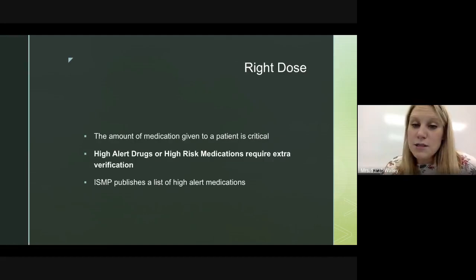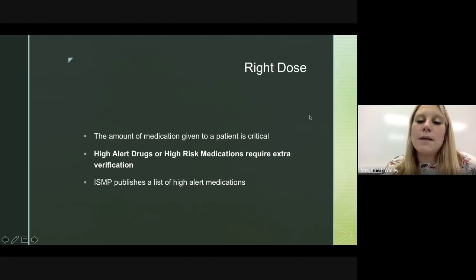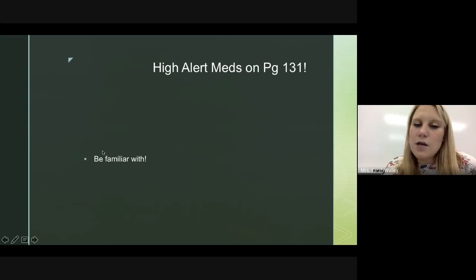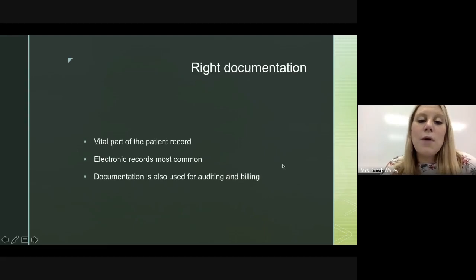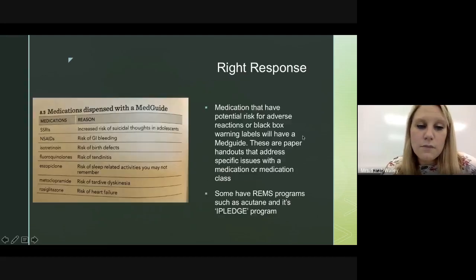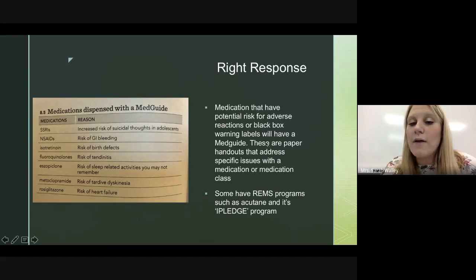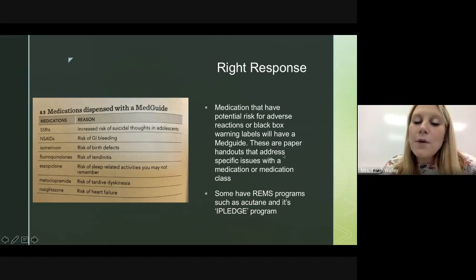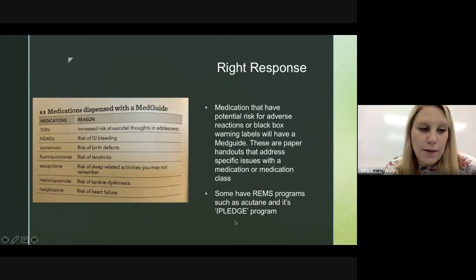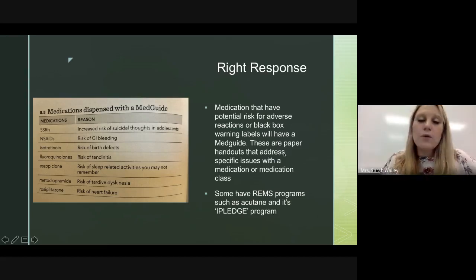Right dose is the right amount of medication given to the patient. High alert or high-risk medications require extra verification. ISMP publishes a list of high alert medications you need to be familiar with. Right documentation is a vital part of the patient record — electronic records are most common, and documentation is also used for auditing and billing. Right response: medications with potential for adverse reactions or black box warnings will have a medication guide. These are paper handouts addressing specific issues with medications. Some have REMS programs, such as Accutane with its iPledge program — that is a test question.